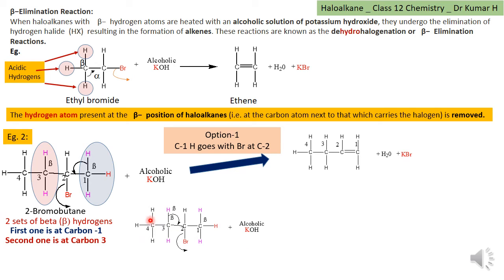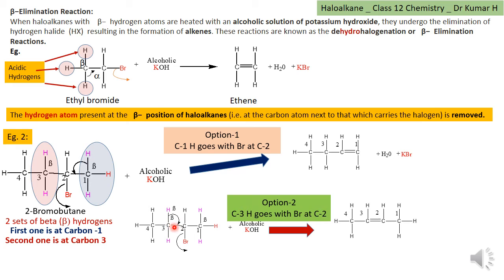The other option is hydrogen from the third carbon, which is also a beta carbon, being taken away by OH- to give water. As a result, the bond between the third carbon and hydrogen migrates to the second and third carbon, leading to the formation of a double bond between carbon 2 and carbon 3, giving but-2-ene (2-butene).